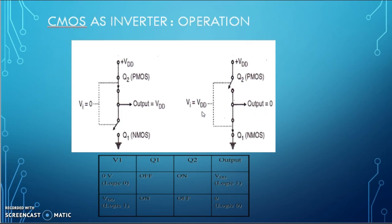For input equal to 1, output equals 0. The same is represented in this truth table. When the input is 0, Q1 is OFF, Q2 is ON and output is VDD that is logic 1. When input is logic 1 that is VDD, Q1 is ON, Q2 is OFF and output is logic 0.